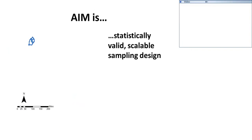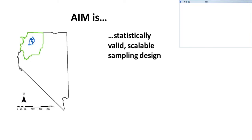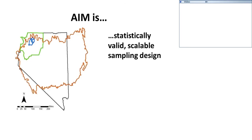The second principle of AIM is to use a statistically valid, scalable sampling design. This addresses the challenge of needing information at multiple scales. It enables you to collect information on a small area — like six allotments in Nevada — but then use that information to inform conditions in the broader BLM district, the broader state of Nevada, or in the ecoregion. Really, you could scale up to any management boundary.